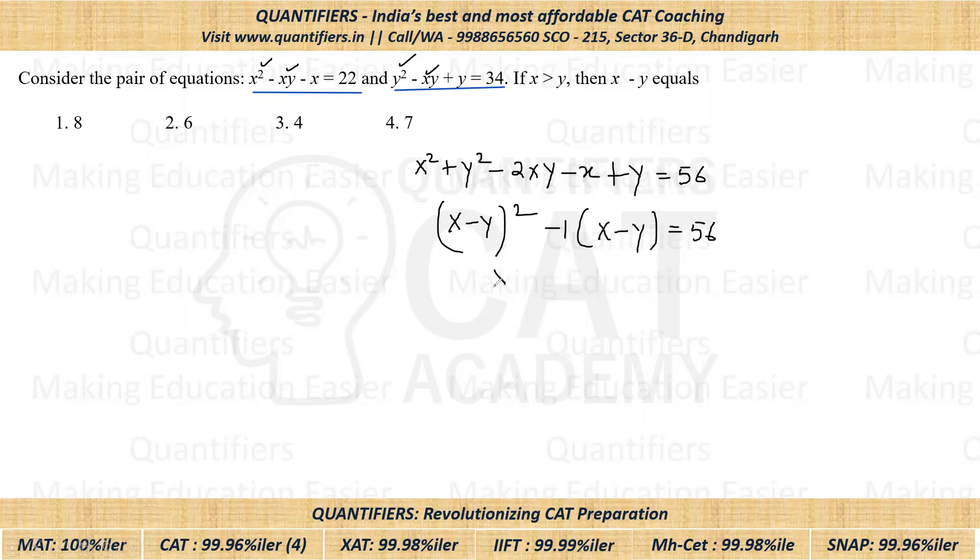So finally, if I take X minus Y common, I'll be getting (X - Y)(X - Y - 1). So let's say if this is a, so this would be a minus one.